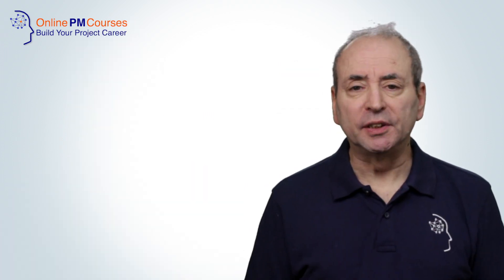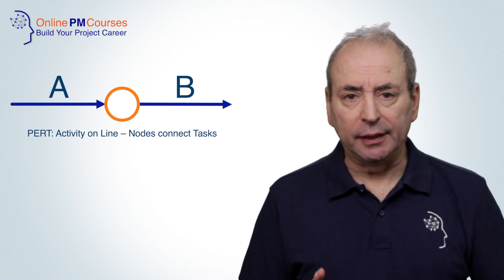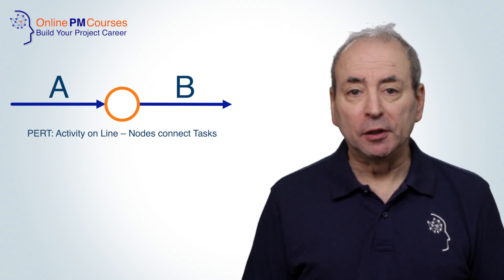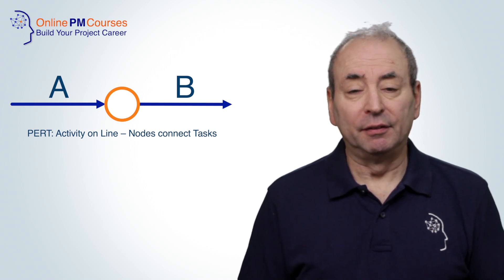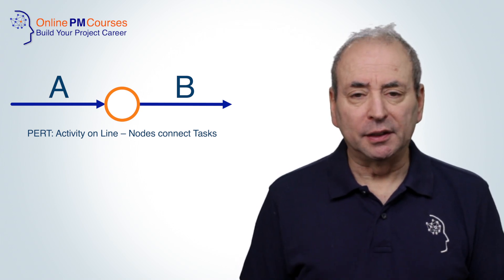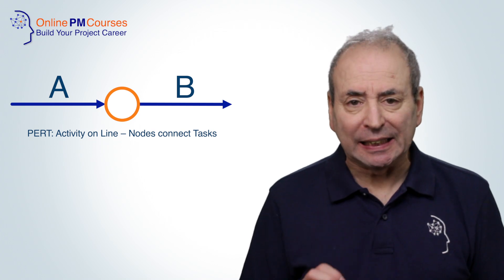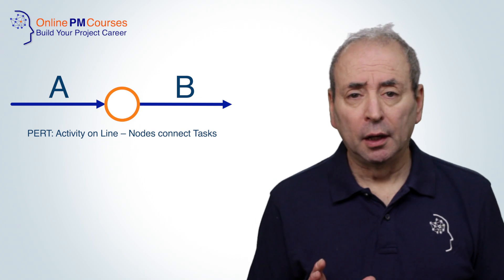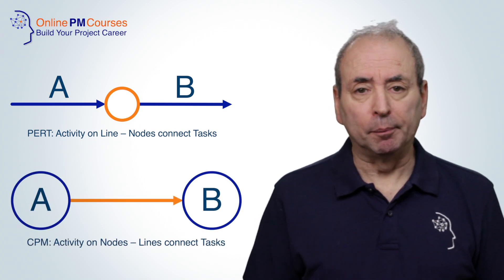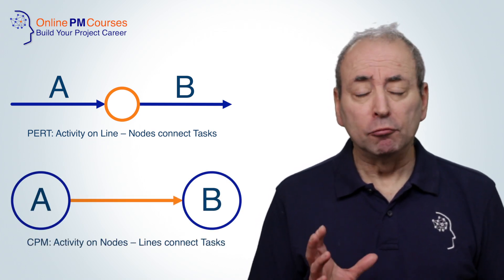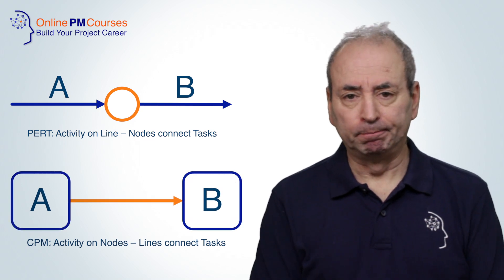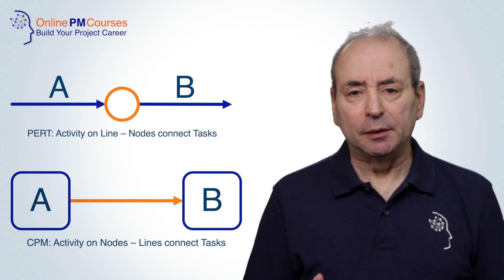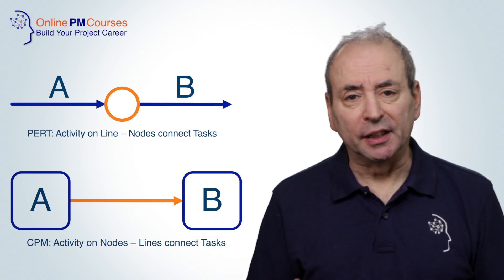The PERT method represents activities as lines with nodes representing the relationship between activities. Fundamentally, a dependency or a sequence of activities is connected by a node. In the Critical Path Method, we represent the activities by those nodes by writing them into boxes. The lines or arrows represent the linkages between activities and therefore the sequence of dependencies.